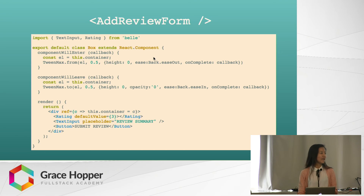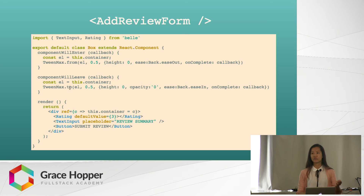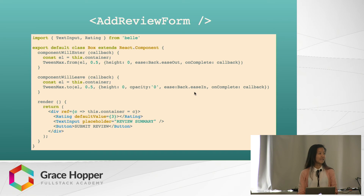The componentWillLeave hook, for when the element leaves the DOM, looks really similar. I'm still using TweenMax, but here I'm using the 'to' method. 'To' is just the inverse of 'from' — where 'from' animates the element from a certain initial state to whatever it becomes, 'to' takes whatever state it's currently at and animates it to a specified final state. This line says we want the element to animate within half a second to a height of zero and opacity zero, so it loses height and opacity at the same time. At the ease setting we're passing back.easeIn, which makes it bounce at the start right before it goes up. And don't forget the callback.